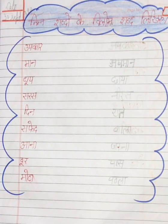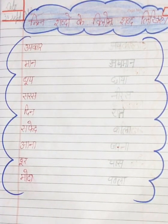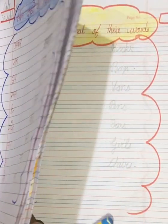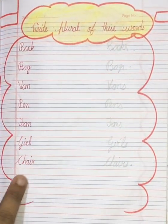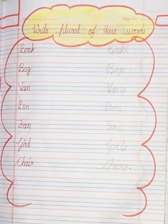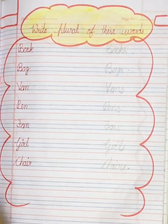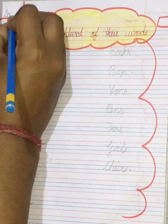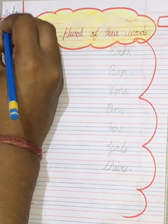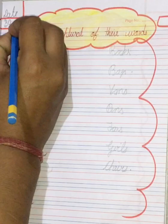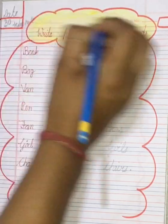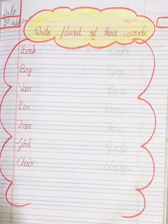Okay students, do the same in your Hindi notebook and also learn the vilom shabdh. Now take out your next notebook. Open your English notebook and first of all write down the date: 13 September 2020. Write down CW.